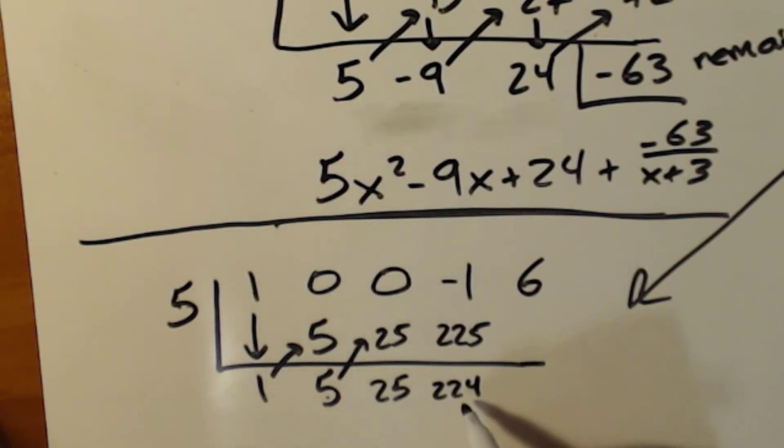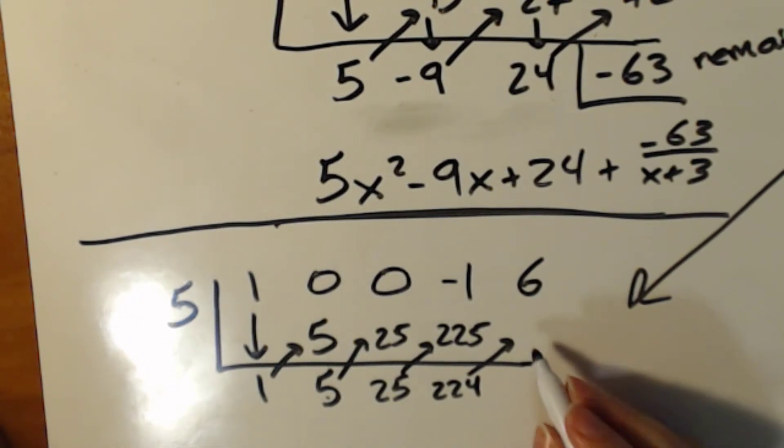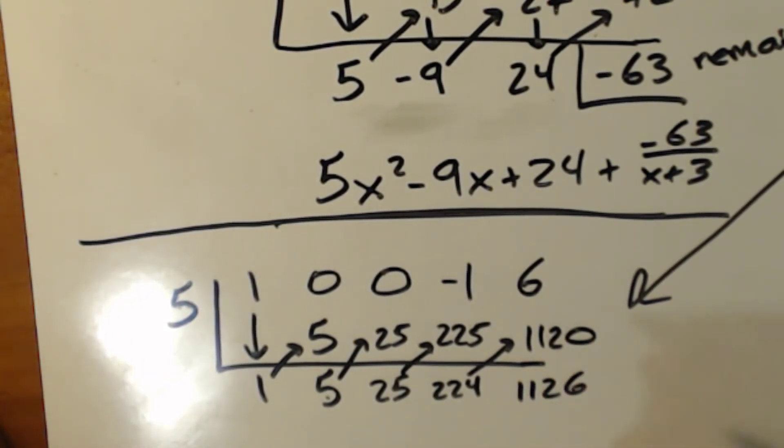25 times 5 is 225, I think. And negative 1 plus 225 is 224. Oh, jeez, I'm going to need my calculator. And then 224 times 5 is a big number. This is what happens when you just randomly make up problems, you guys. This is why the book has much nicer ones for us.